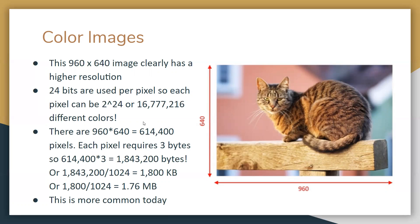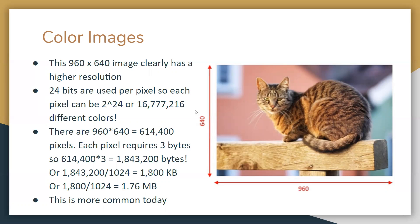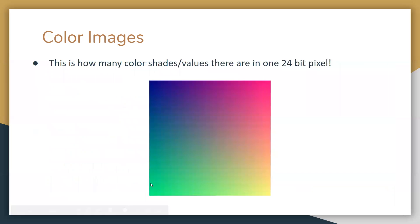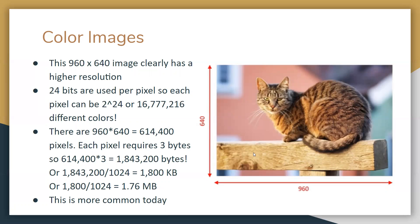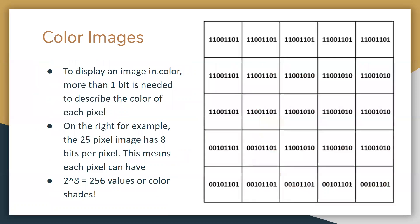This is actually how many color options you get in a 24-bit pixel — about 16 million different shades of color per pixel. Remember, there are 614,400 pixels in this image. At this point, this is ridiculously large compared to the previous image.